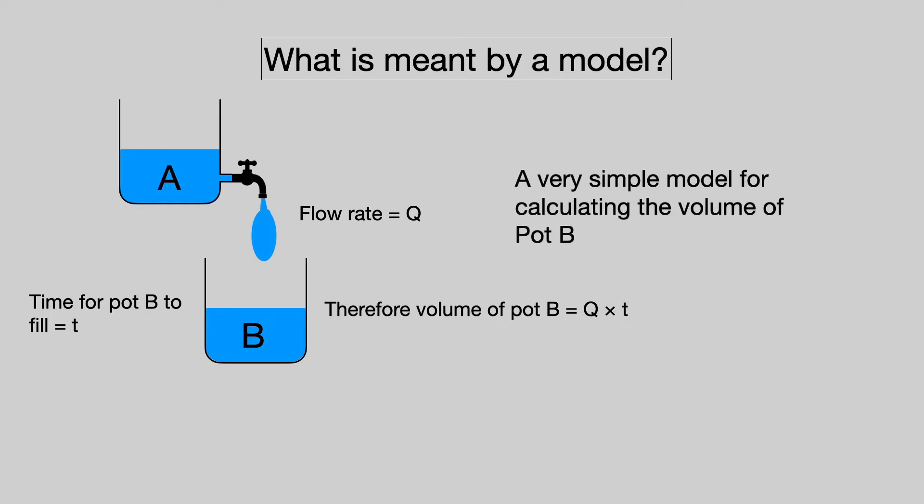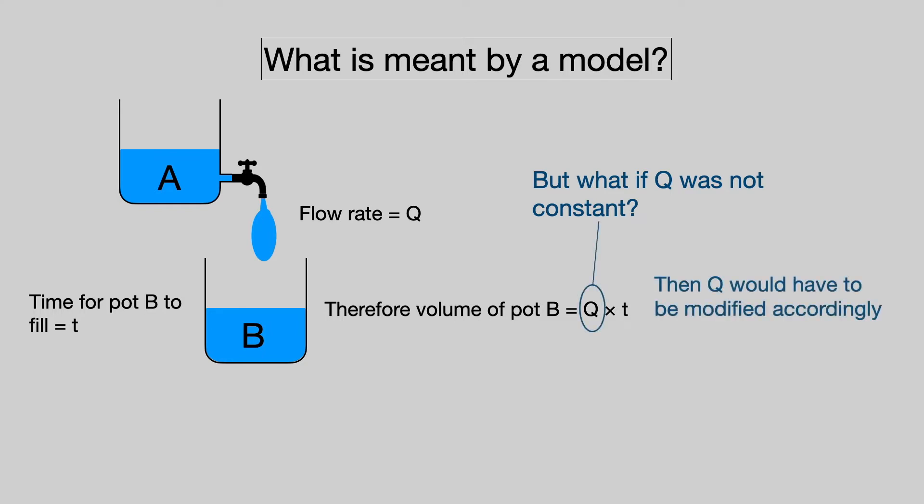This is a very simple model for calculating the volume of pot B, but it does make a number of assumptions. For example, it assumes that the flow rate Q is constant. But what if Q was not constant? Then we would have to change Q in the algorithm accordingly. For example, if Q was exponential, we may introduce a logarithmic term.